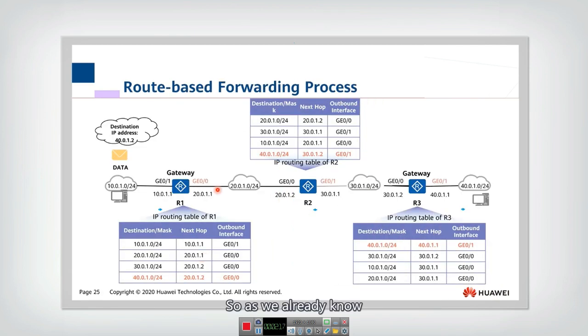As we already know how to generate the routing entries and how to do the comparison, now we can summarize them together to understand the whole process of route-based forwarding.